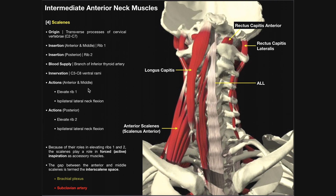Because the scalenes can elevate the first and second ribs, they play a role in forced or active inspiration. During quiet breathing at rest, only the thoracic diaphragm and external intercostal muscles are needed. However, during exercise or forceful inhalation, the scalenes are activated. By elevating the first and second ribs upward, they increase the volume of the thoracic cavity, facilitating increased lung volume and greater air intake.